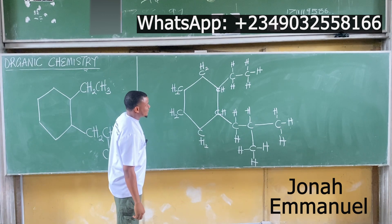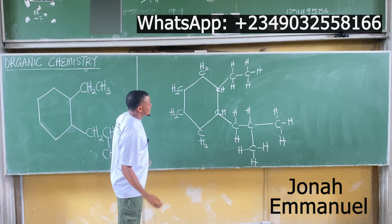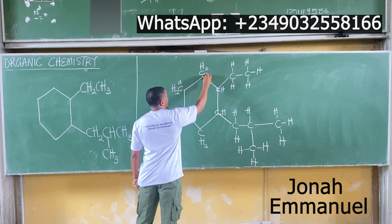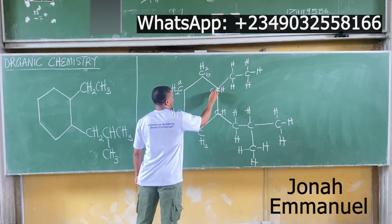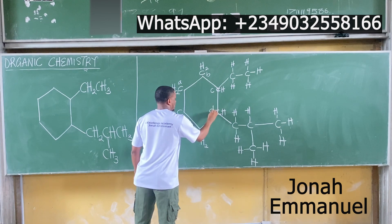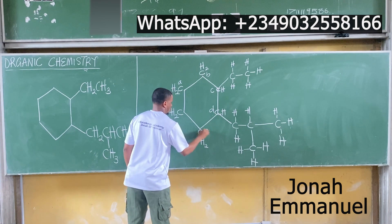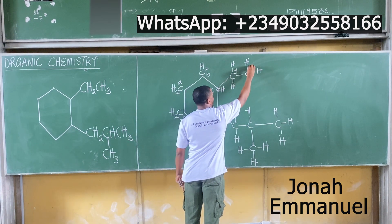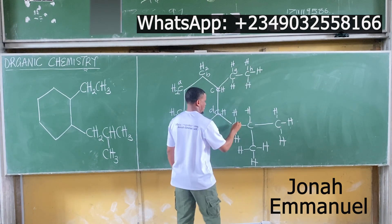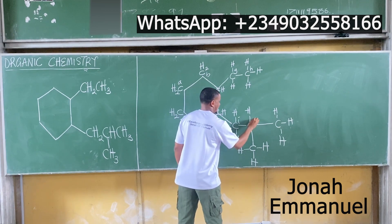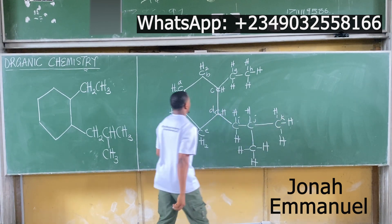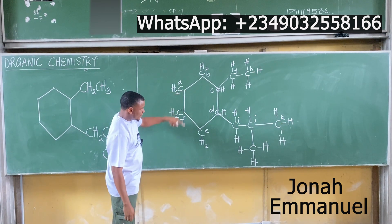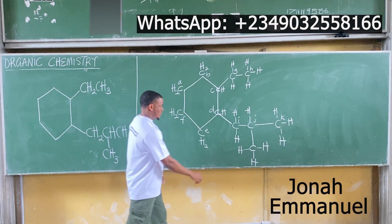Let's start and check by labeling the carbons alphabetically to make it easier: A, B, C, D, E, F, G, H, I, J, K. Come back to A.